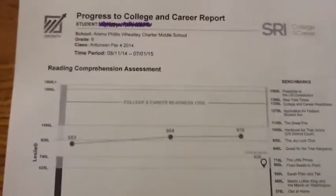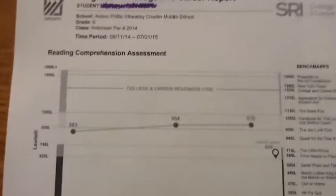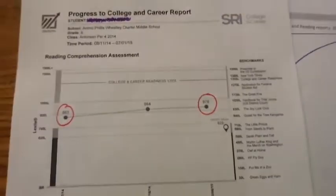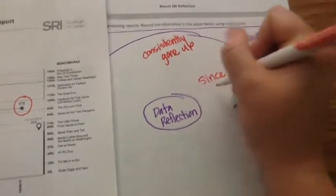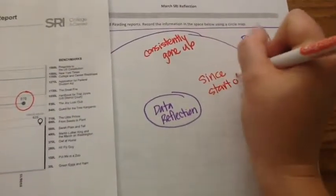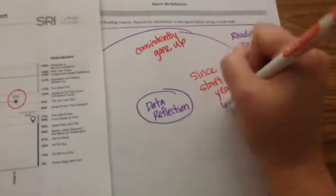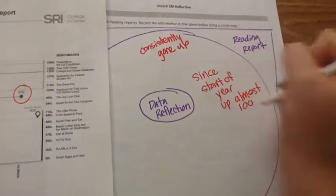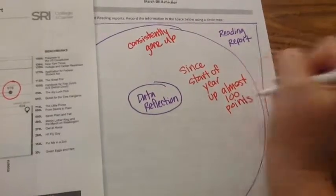I also want to record some basic information. So for example, on my report, you can see that I started at an 883 and my most recent test was a 976. So since the beginning of the year, I've gone up almost 100 points. So I'm going to write, since start of year, up almost 100 points. And you'll be doing this for your report.